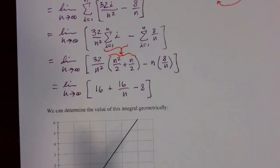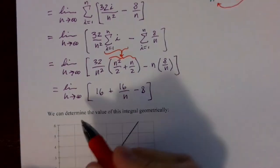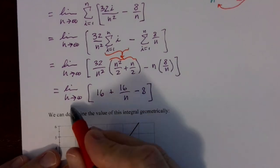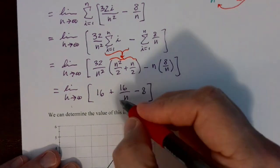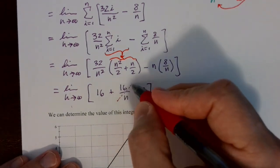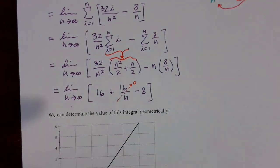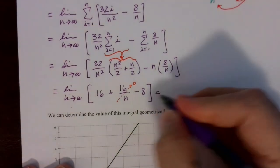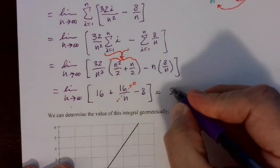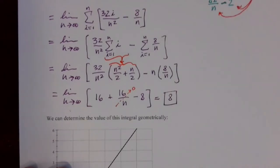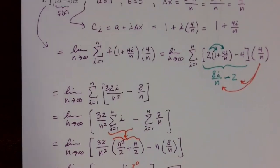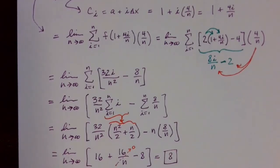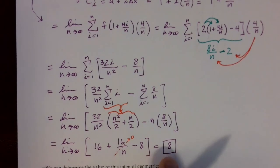Taking the limit as n goes to infinity: 16 and 8 don't change, but 16/n goes to 0. We're left with 16 minus 8, which is 8. That is the value of this definite integral — it's a real number, which could be positive, negative, or zero.